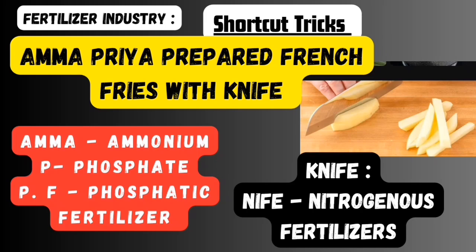For the last word 'knife', remove K and take NFE — nitrogenous fertilizer. So this shortcut tells us that the fertilizer industry centers around the production of nitrogenous fertilizer, phosphatic fertilizer, and ammonium phosphate.